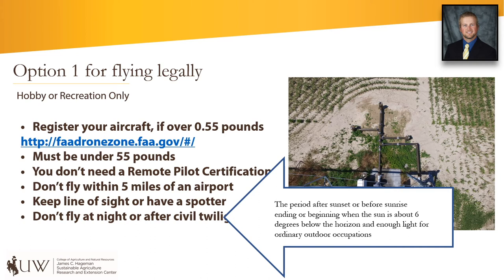There are a few options to legally fly your drone in the United States. The first option is to fly under a hobby or recreation designation. You still must register your aircraft if it is over 0.55 pounds. The drone also must be under 55 pounds — that would be an extremely large drone, but as technology increases there's certainly that possibility. You do not need a remote pilot certification. You still have to follow the rules: don't fly within five miles of an airport, keep line of sight of the drone or have a spotter in radio contact with you, and do not fly at night or after civil twilight.